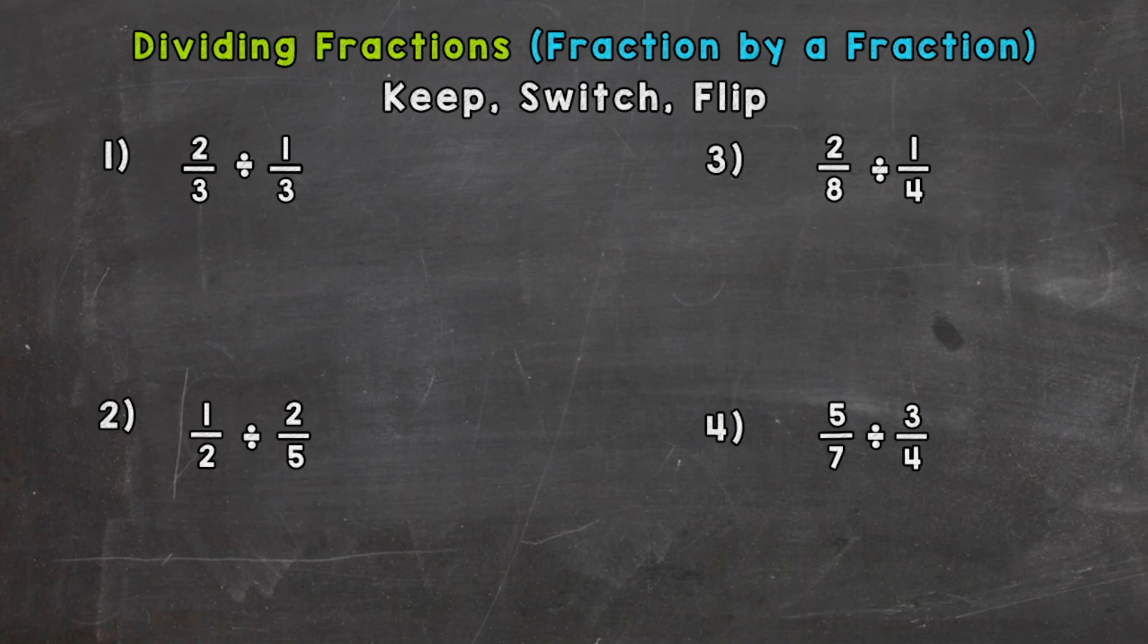Let's jump right in to number one. We have two thirds divided by one third. So let's take a look at our steps for dividing fractions. The first step is keep, so that means we're going to keep our first fraction as is as we rewrite this problem. So two thirds. Next we have switch, which means we are going to switch this division sign to multiplication. So we're actually going to do the opposite of division.